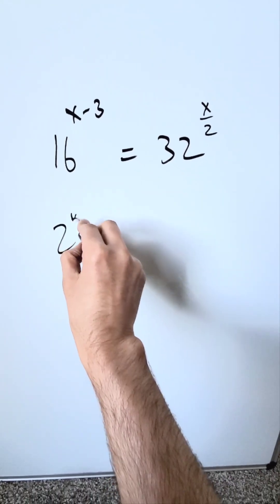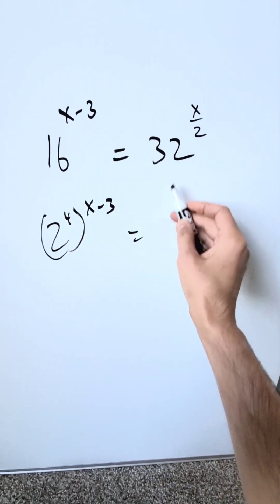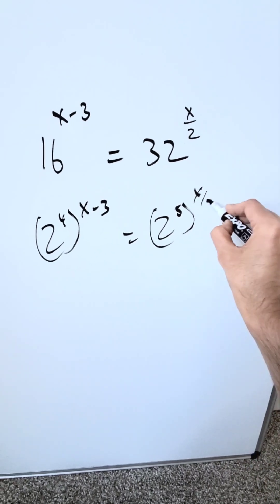16 is 2 to the power of 4, and you know that's to the power of x minus 3. 32 is 2 to the power of 5, and that is to the power of x over 2.